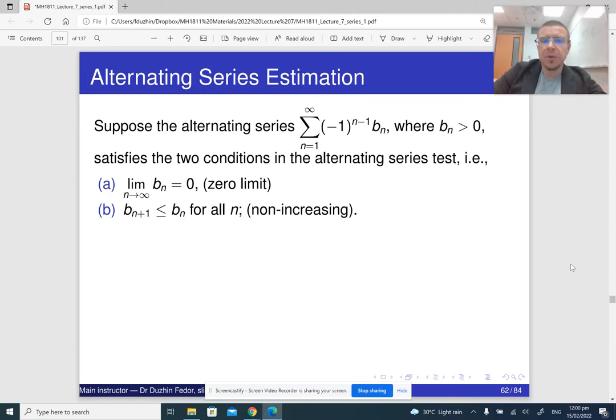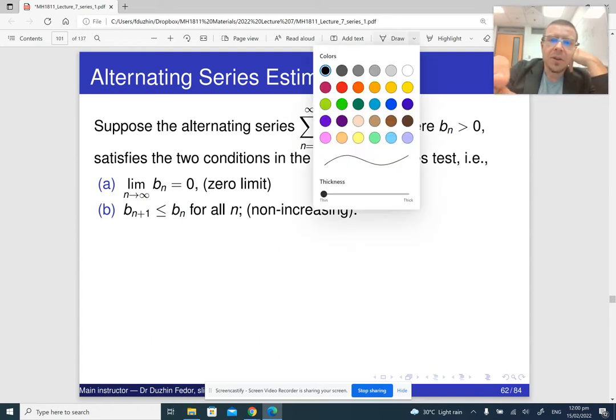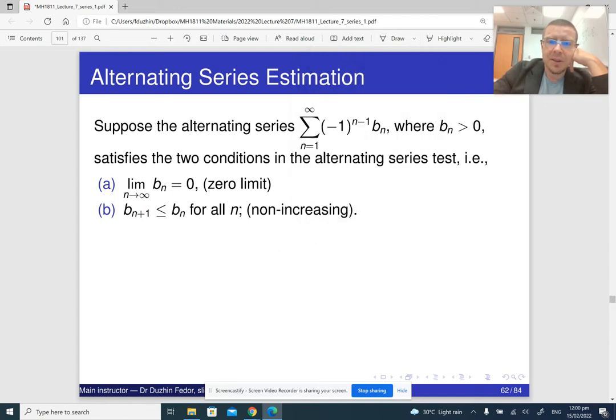So suppose that we have a converging alternating series, (-1)^(n-1) times b_n, where b_n has zero limit and is non-increasing. We know from the alternating series test that our series is convergent.